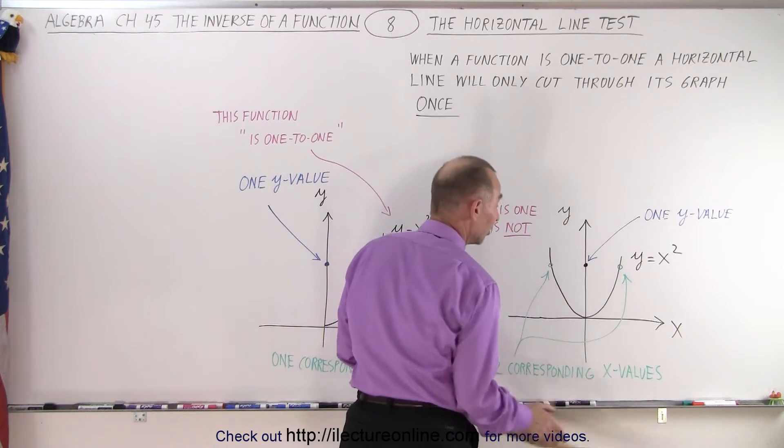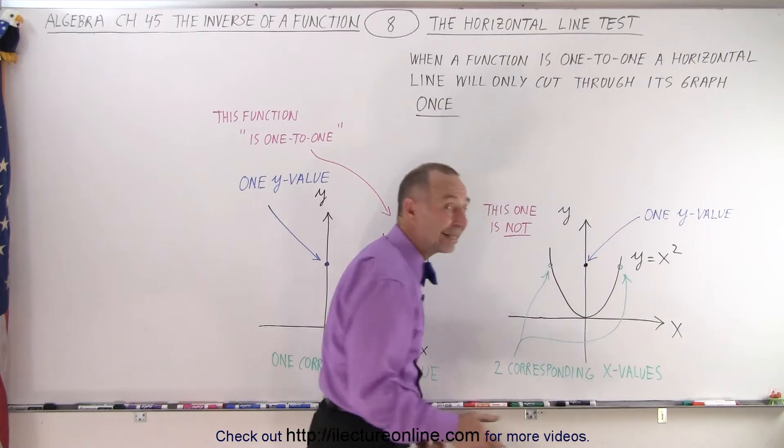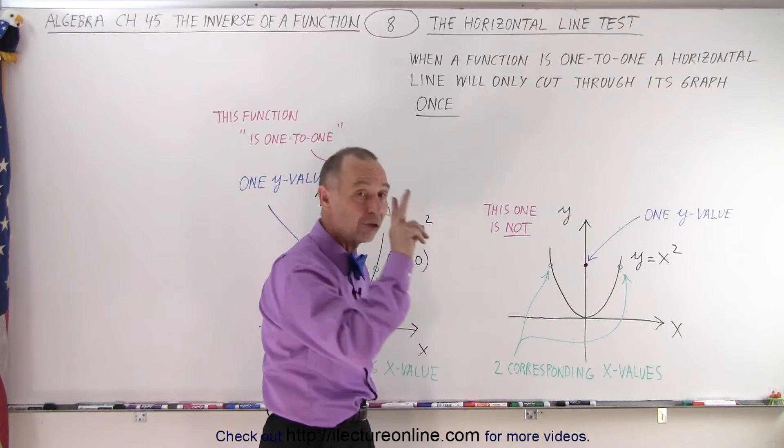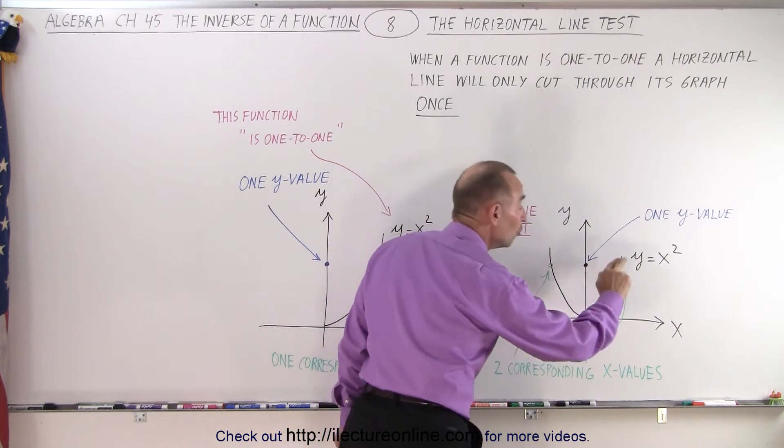For any given Y value, there's two specific values for X because the horizontal line test crosses through the graph twice. So, that means for every one value of Y, there are two values of X.